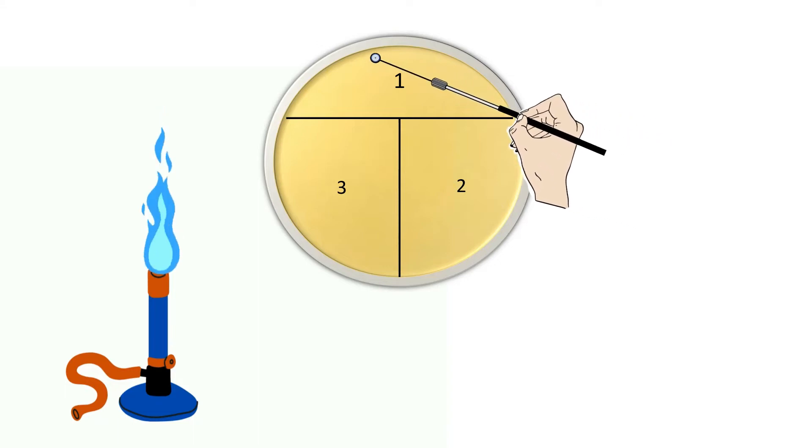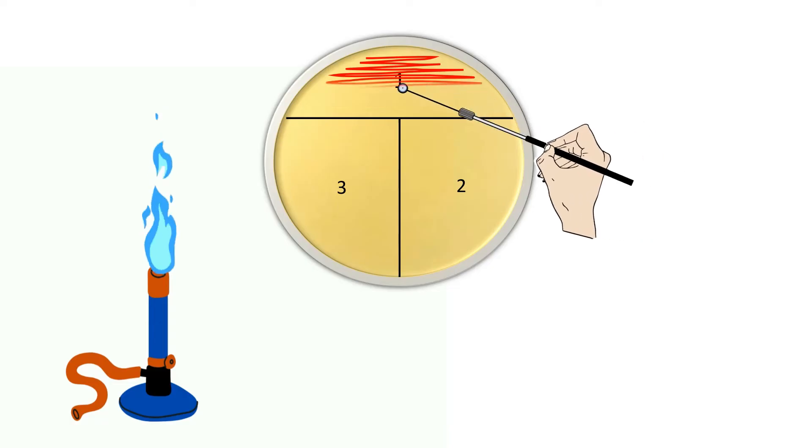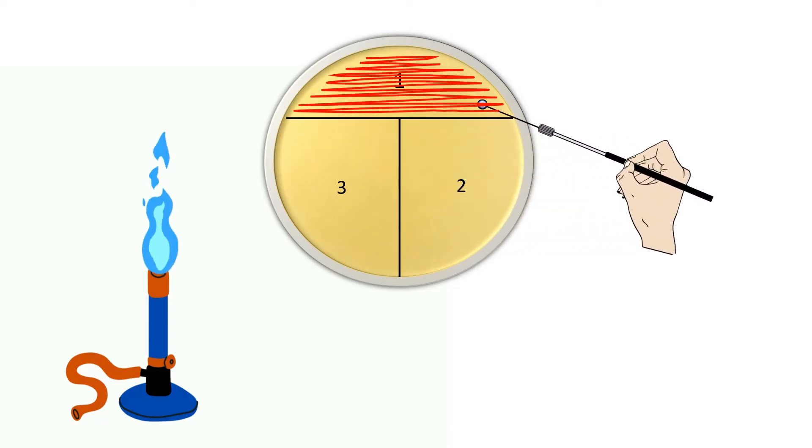Place the wire loop containing sample near the edge of the petri plate in area 1 and streak back and forth in a zigzag motion to spread the culture.